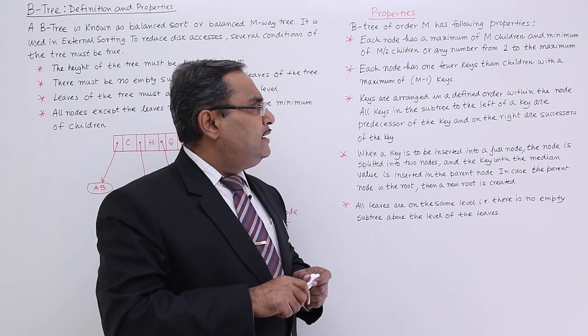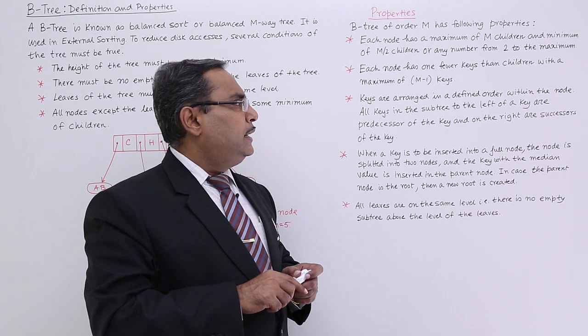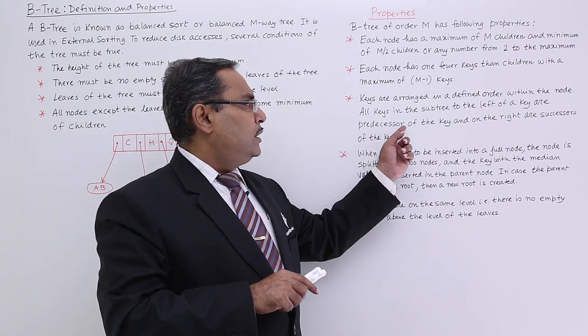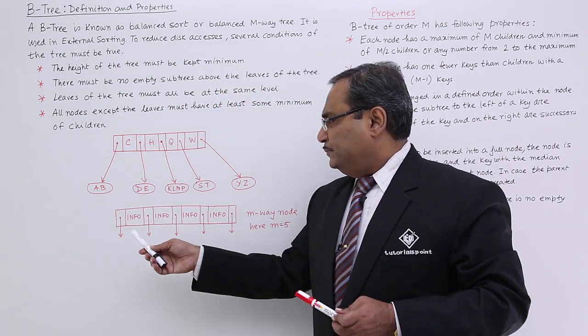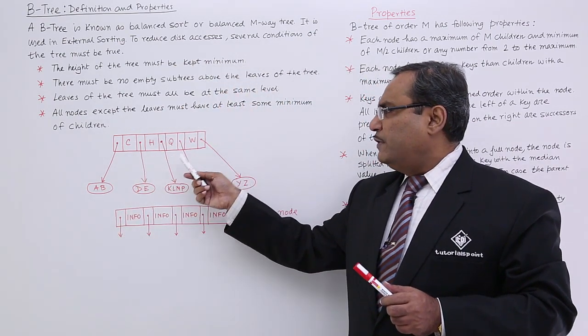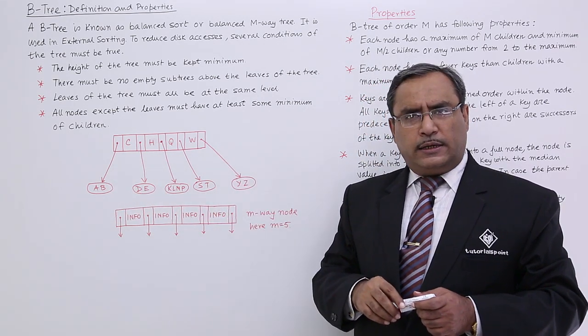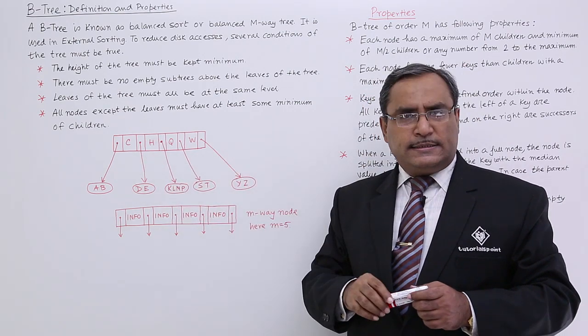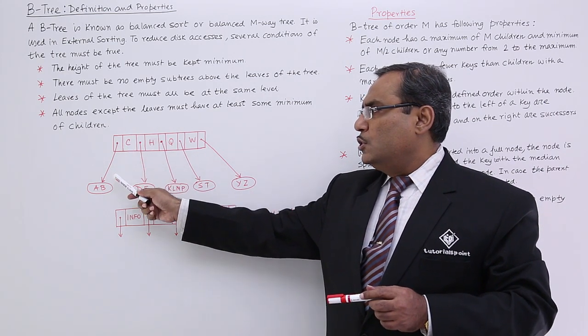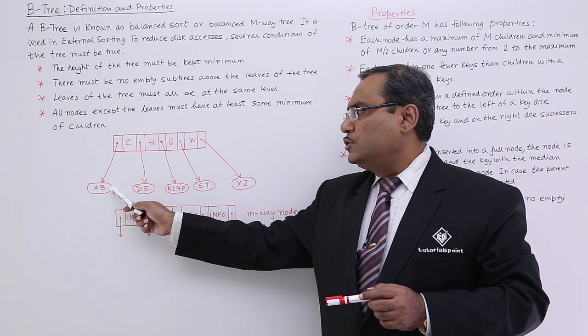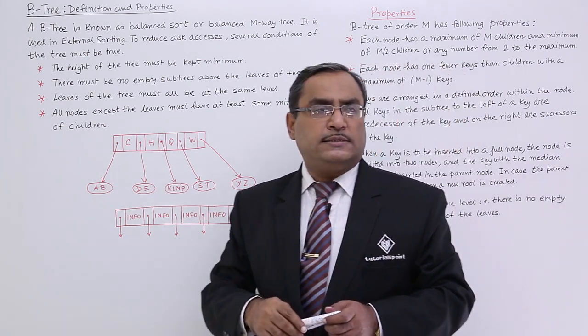Keys are arranged in a defined order within the node. All keys in the subtree to the left of a key are predecessors of the key and on the right are the successors of the key. All the key values which will be kept within a particular node will be in certain order. Order means here you see they are in the ascending order. And all the key values which will be earlier to this same will be known as predecessors and rest values will be known as the successors.